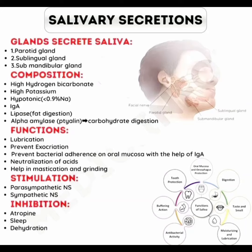Assalamu alaikum dear viewers. In this video I am discussing about salivary secretions. The glands that involve in secreting saliva are: number one, parotid gland; number two, sublingual gland; and number three, submandibular gland. The composition of saliva includes high bicarbonate, high potassium, and is hypotonic — that is less than 0.9 sodium.